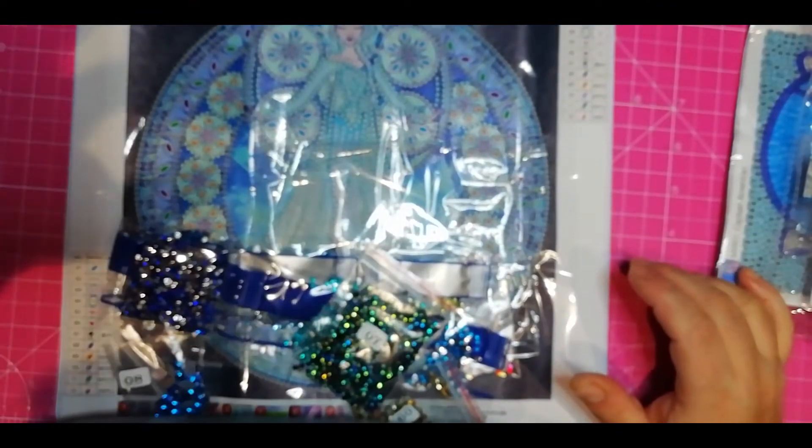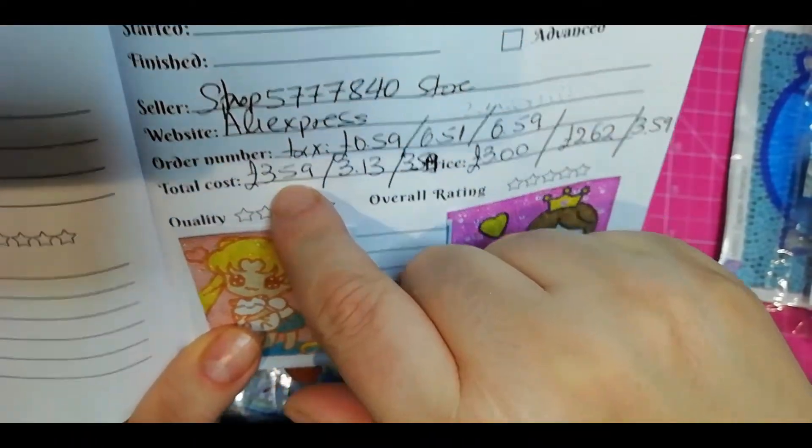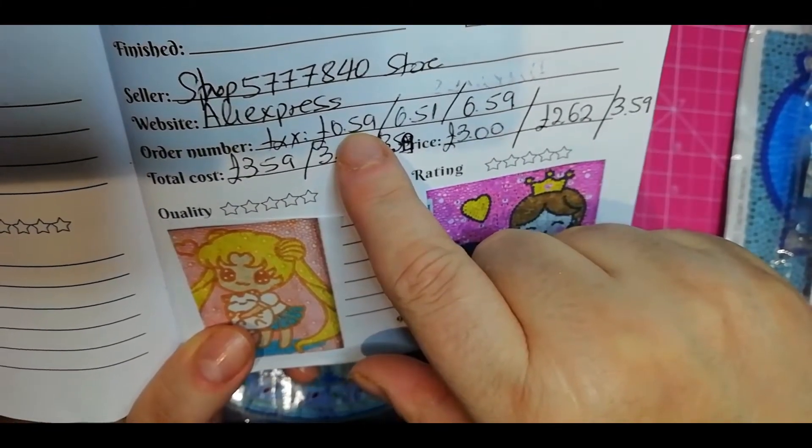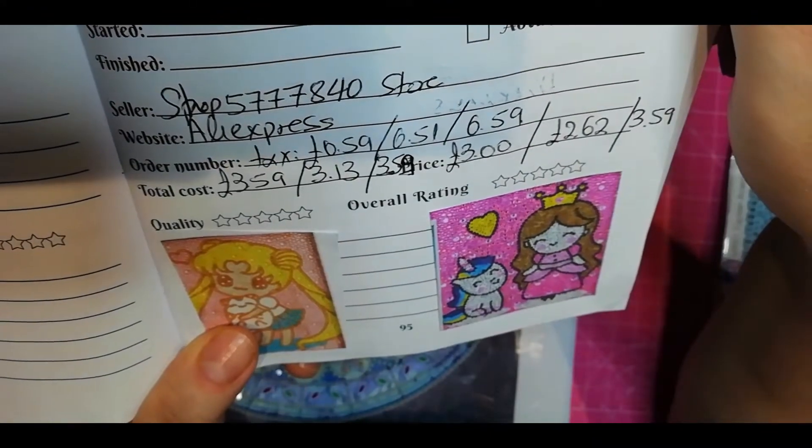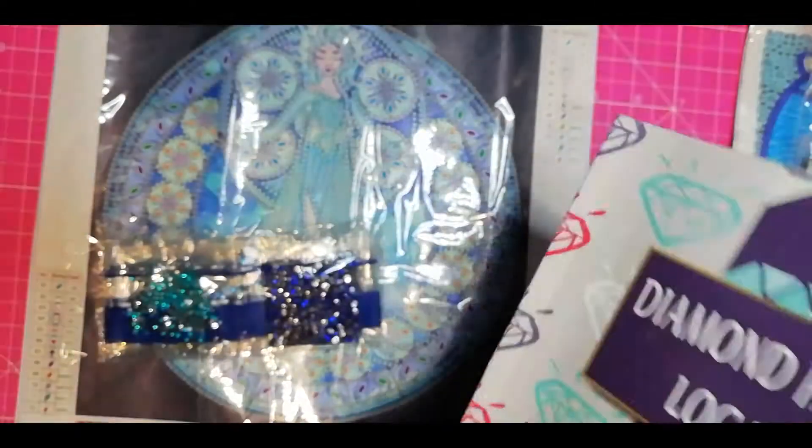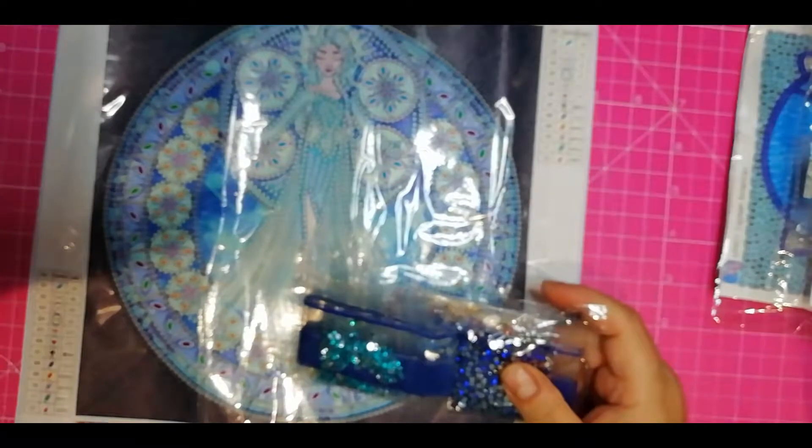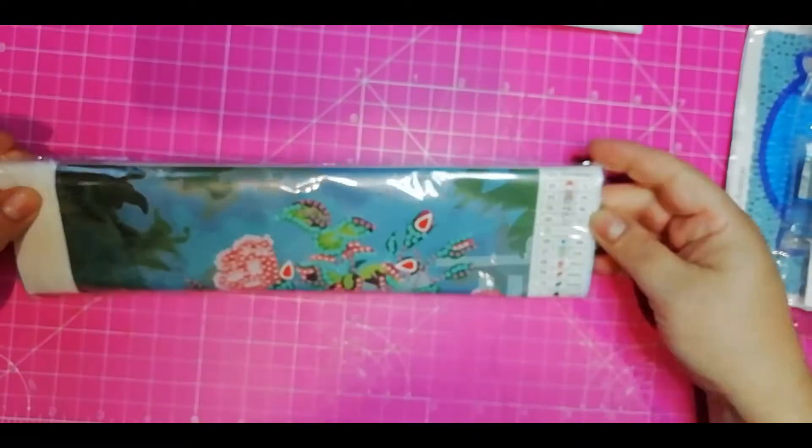Let's go to our next one. For Elsa, I paid £3.59 and 59p tax. Okay, let's go to our roses. I'm so curious about those.